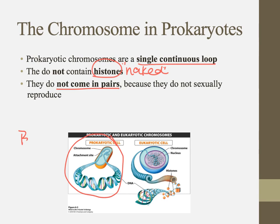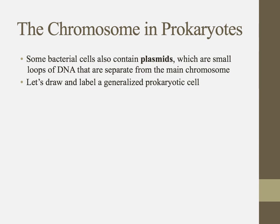In prokaryotes, we call that binary fission. It does not involve the fusion of gametes, which is what causes the pairs in eukaryotes. That single circular chromosome isn't the only spot where we might find DNA in a prokaryote. Some bacterial cells also contain these things called plasmids, which are small loops of DNA.